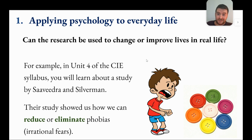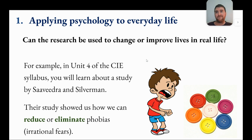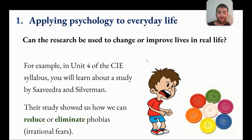This study is about treating a boy who has a phobia of buttons. This phobia was causing the boy and his mother significant distress. In the results, we can see that six months and twelve months after the study took place, the boy is exhibiting far fewer symptoms of a phobia — he can wear shirts with buttons, go to school, and be in a room with people wearing buttons. So this is an example of psychological research improving someone's life — a good example of application.